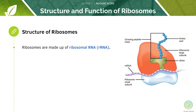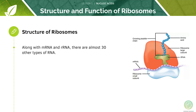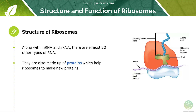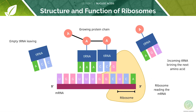Ribosomes are made up of ribosomal RNA. In addition to messenger RNA there are almost 30 other types of RNA. Ribosomes are also made up of proteins which help ribosomes to make new proteins. Ribosomes are a type of organelle — they read information from the mRNA to make proteins for various cellular functions such as growth.